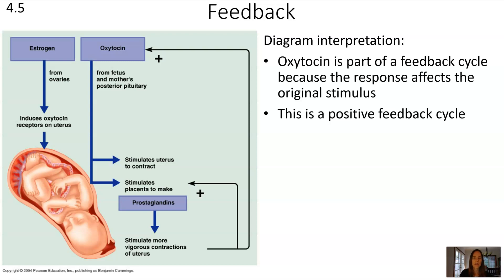In this case, that's a good thing because what's happening here is oxytocin is triggering the uterus to contract, and it stimulates the placenta to make prostaglandins, which cause more contraction, which then link back and cause more oxytocin, more contraction, more oxytocin, more contraction. This is a good thing because this is allowing for the baby to be delivered.